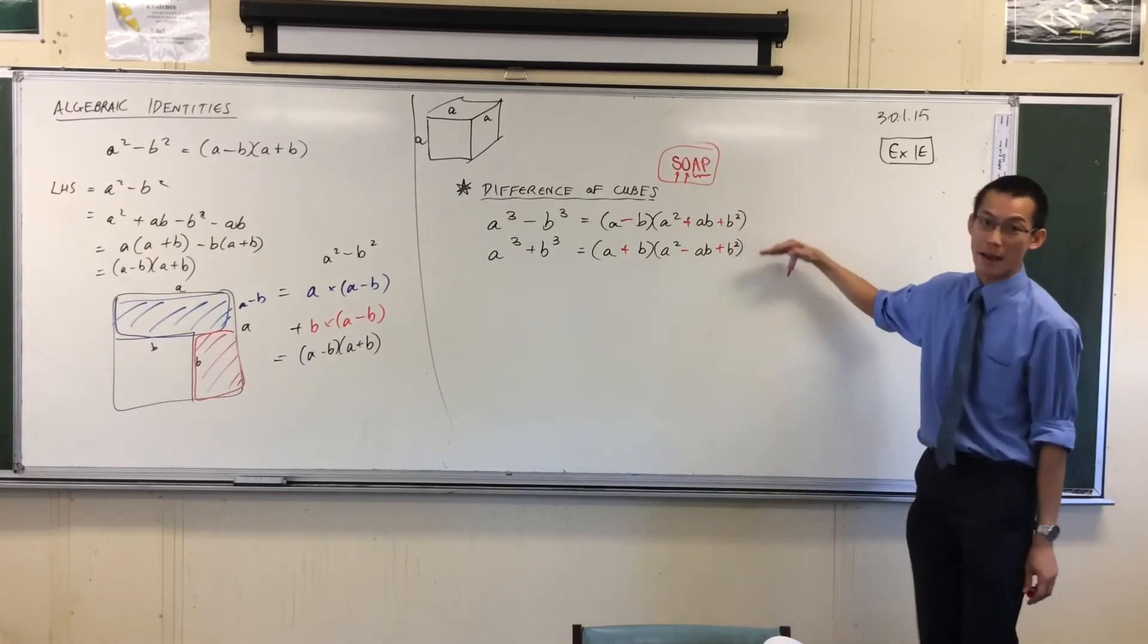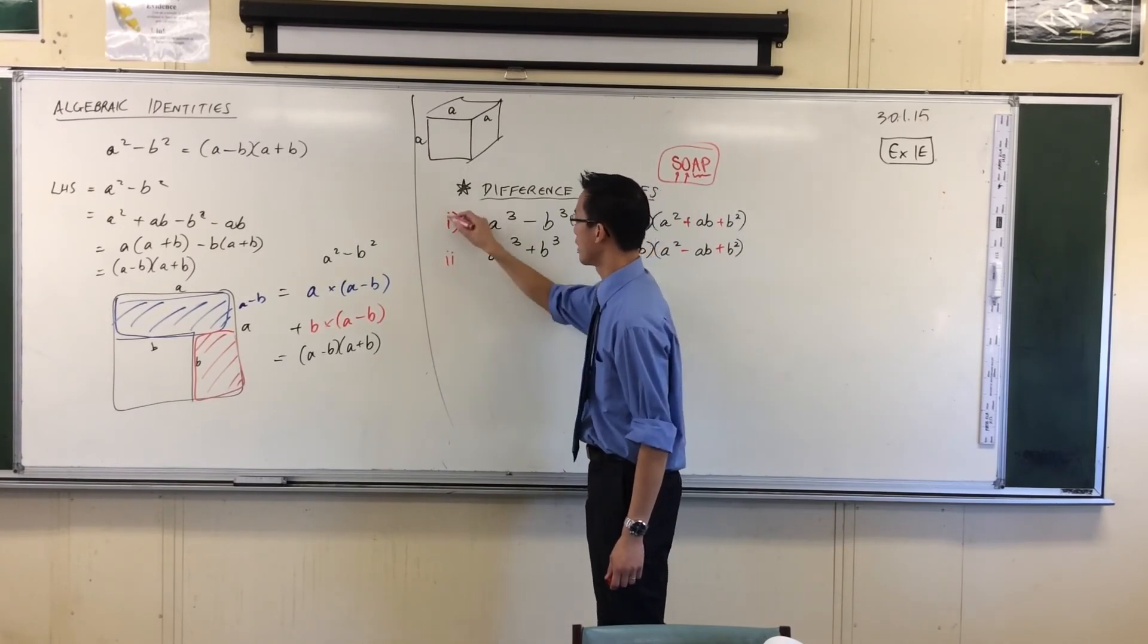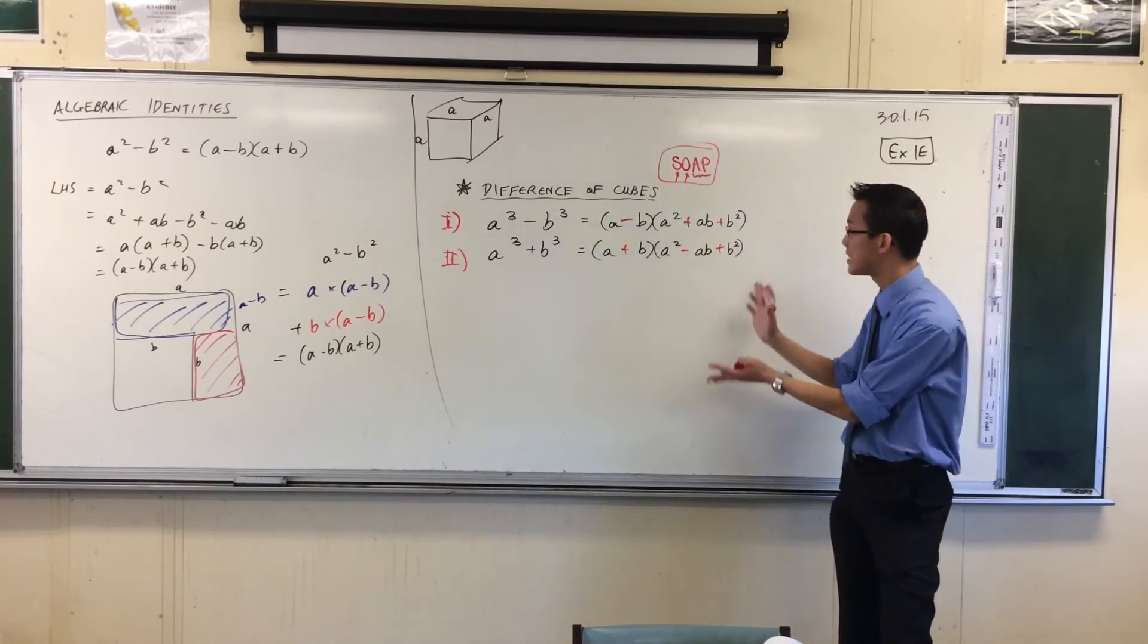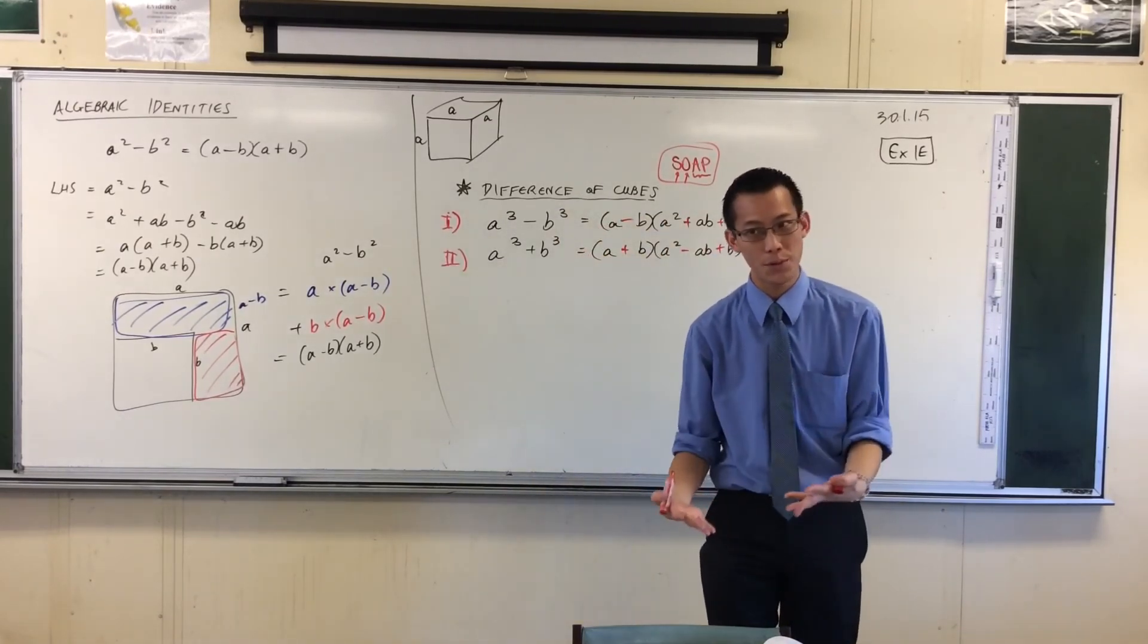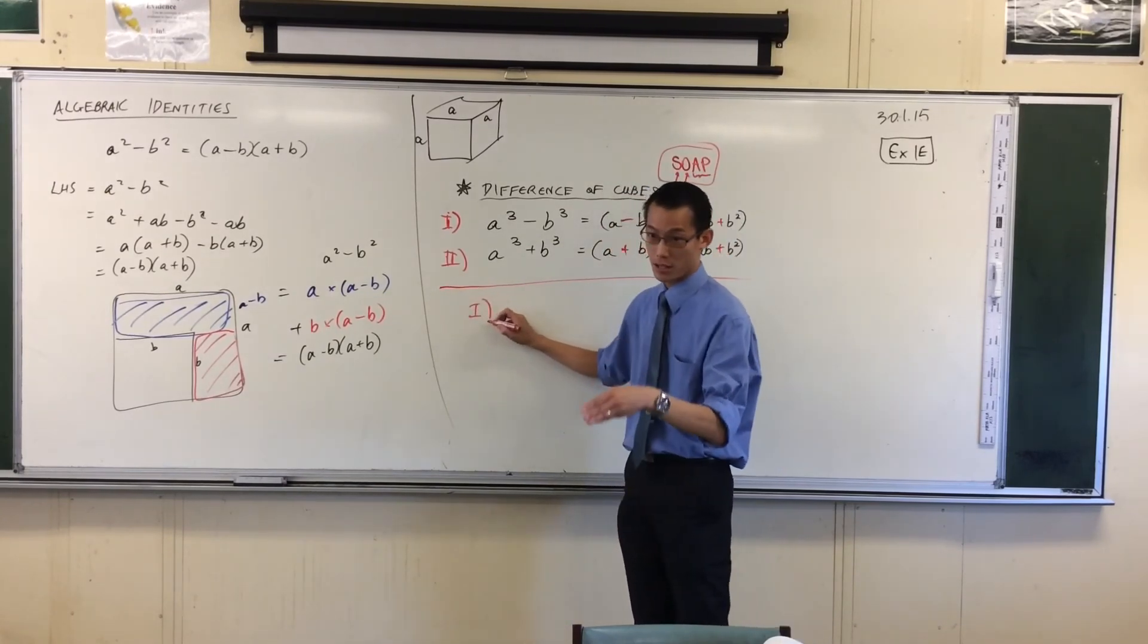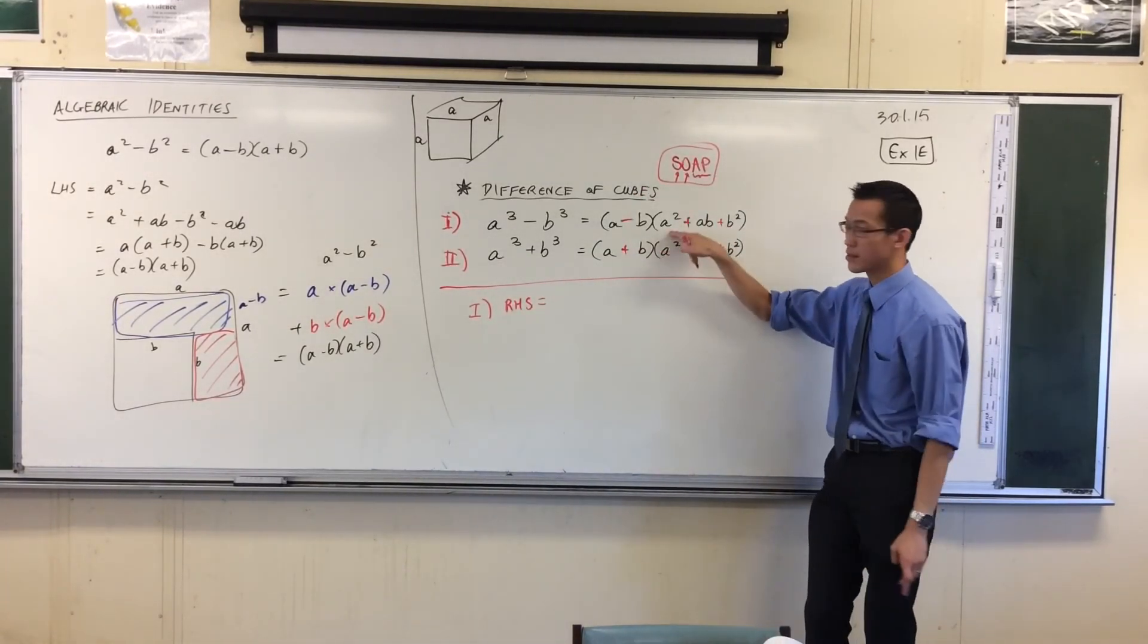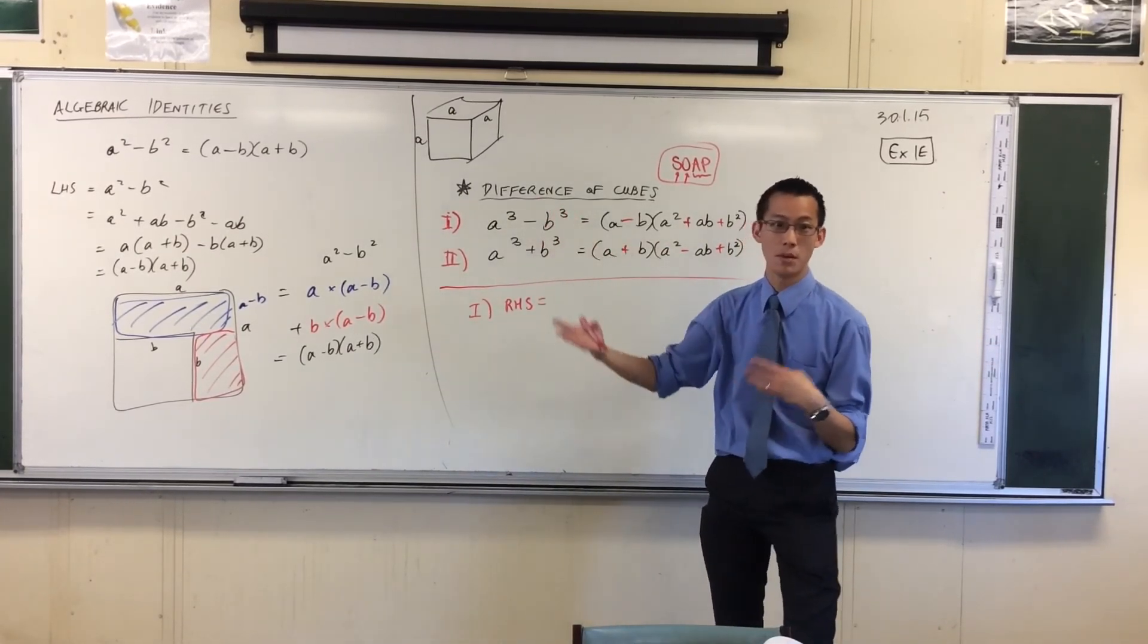I'd like you to go ahead and verify both of these. Let's call this one Roman Numeral 1. Sorry, Roman Numeral 1. Roman Numeral 2. Go ahead, as with any proof of an identity, okay? You cannot start with saying this because that's assuming what you're trying to prove. Instead, the way you ought to set it out is like so: go from one side to the other. This time I'm mandating which way I want you to go. I want you to go from right to left, okay? So take these, expand them out, and verify that everything cancels and you arrive back at your sum or difference.